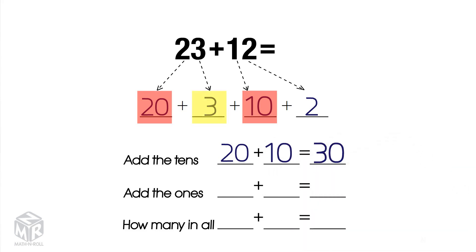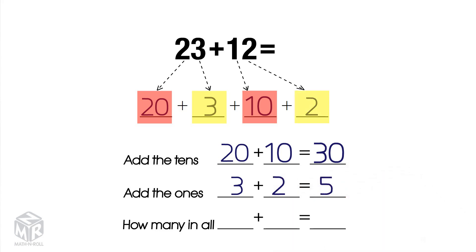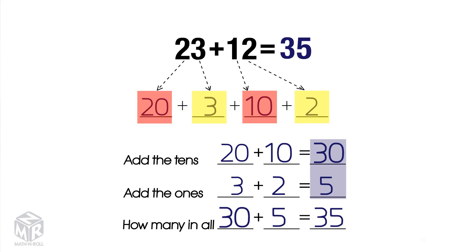Next, we add the ones: 3 plus 2 equals 5. Finally, we add it all together: 30 plus 5 equals 35. So 23 plus 12 equals 35.